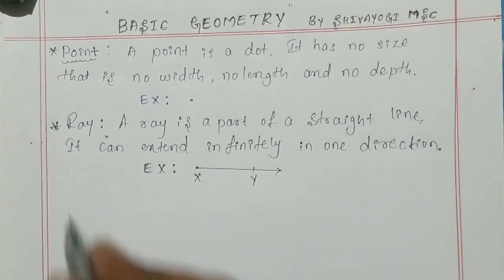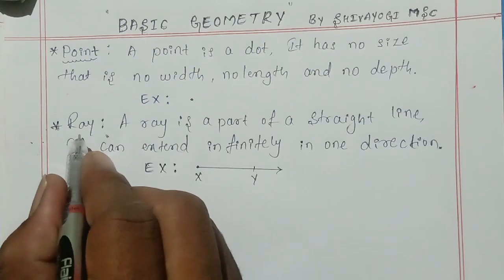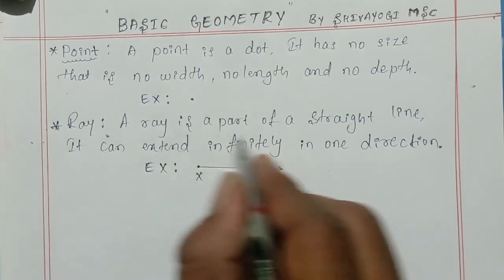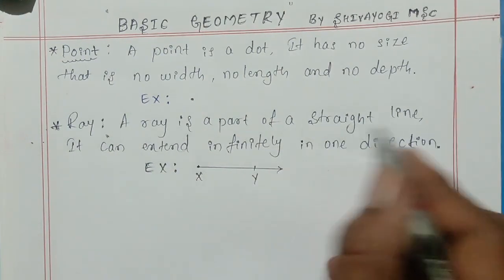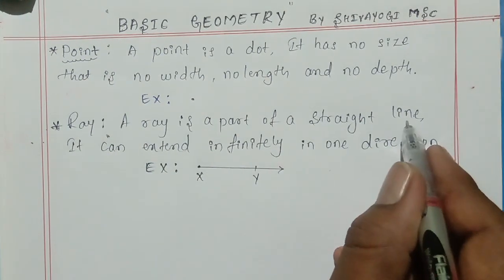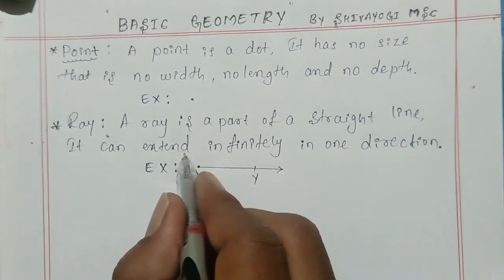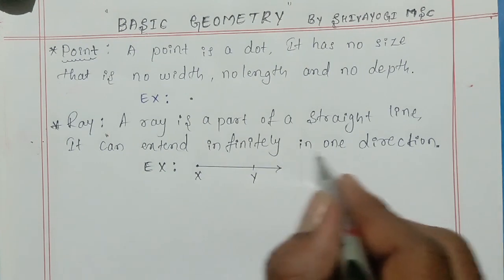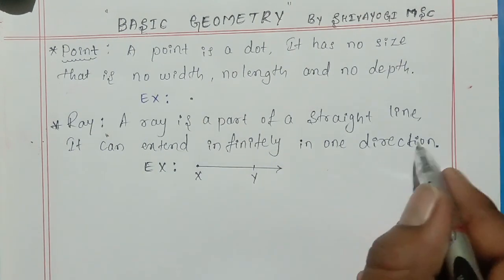The second one is ray. A ray is a part of a straight line, and it can extend infinitely in one direction.